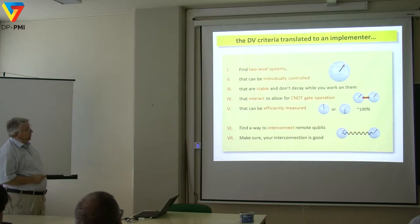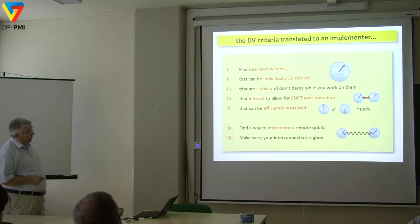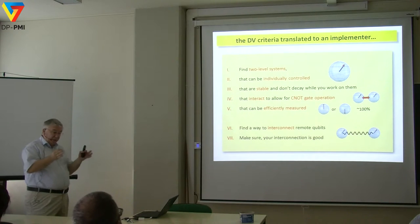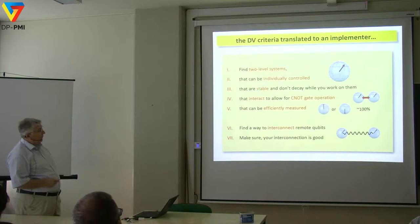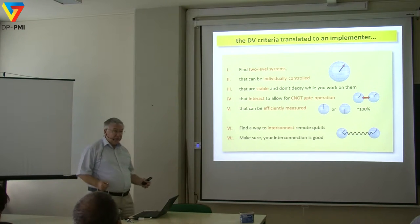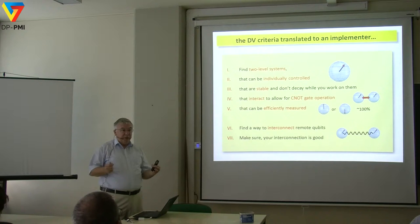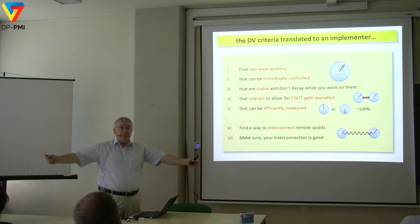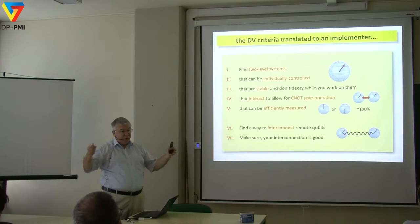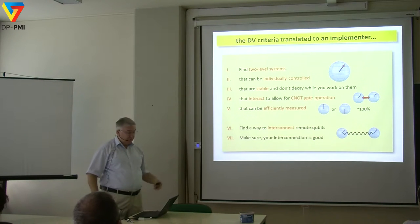Again, the DiVincenzo criteria: we need to find individual two-level systems, be able to individually control them, and make sure they are stable and don't decay while we're working on them — you don't want them to decohere. They need to interact in order to make a two-qubit operation — there's no entanglement without interaction. Even entanglement swapping, which is a teleportation protocol, always requires an interaction.